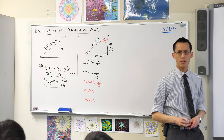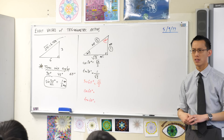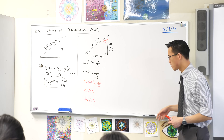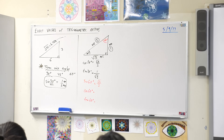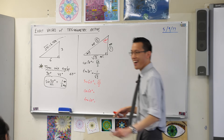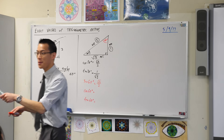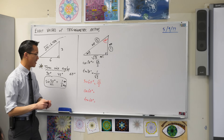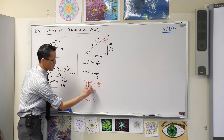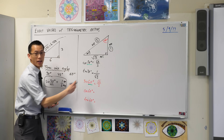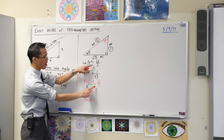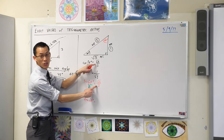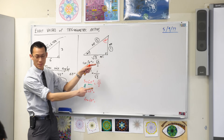So sine 60 is root 3 on 2. Didn't we write down root 3 on 2 a second ago? Which one was that? It was cos 30 — because it's the complement, exactly. See? Sine 60 and cos 30 are complements, so that's why these two ratios are the same.